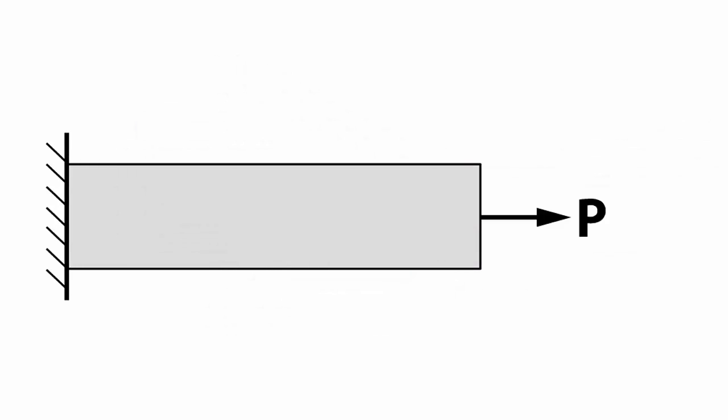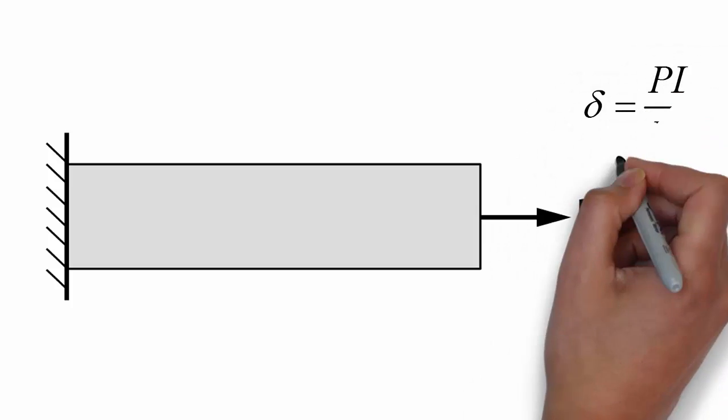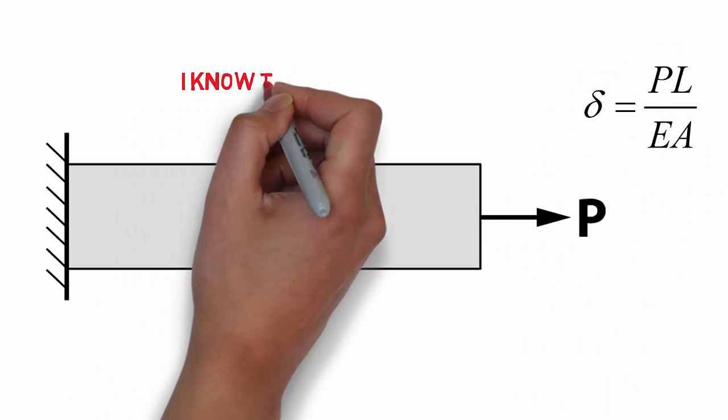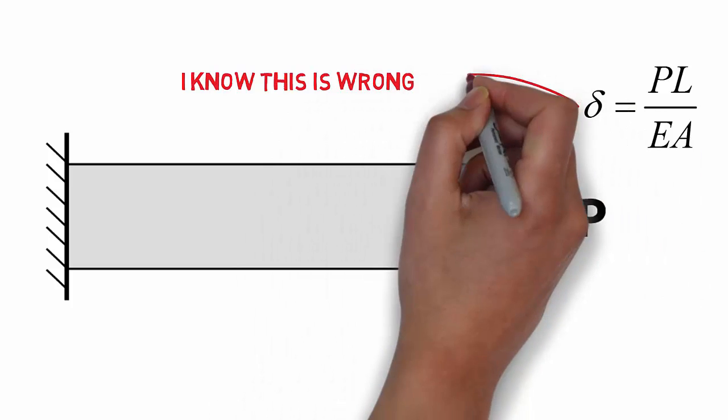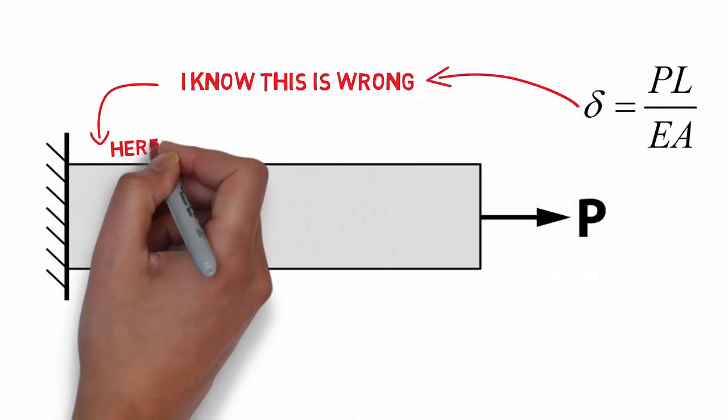Looking at a typical engineering problem, then, we are faced with having a simplified force-displacement relationship that we can apply to the structure, but also the knowledge that there is a region within the structure where that relationship is not really correct.